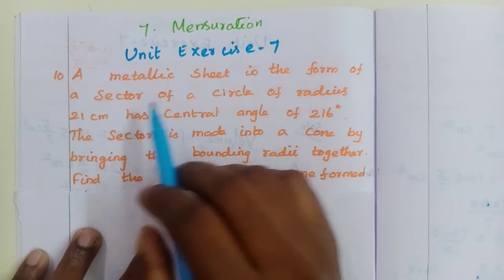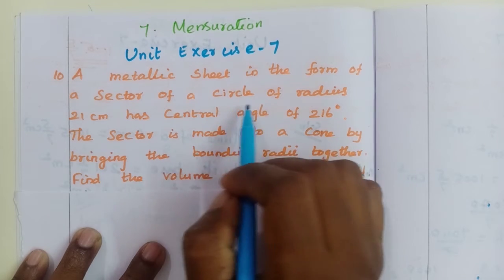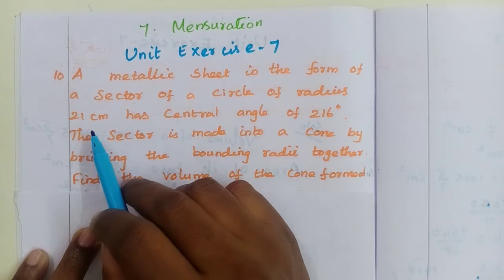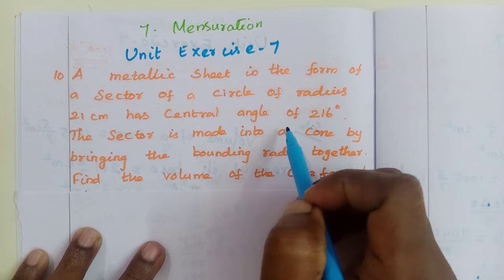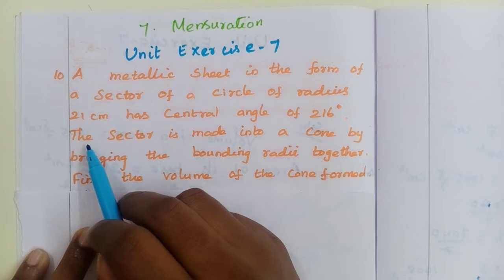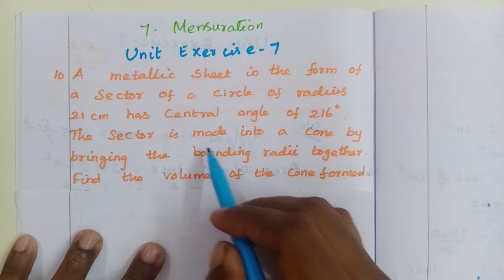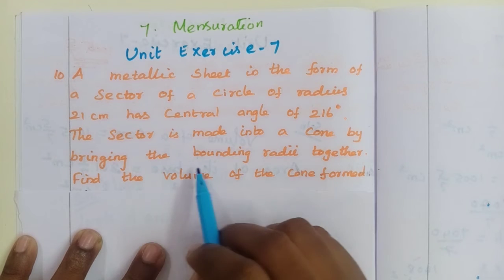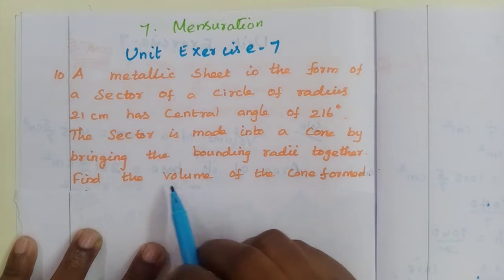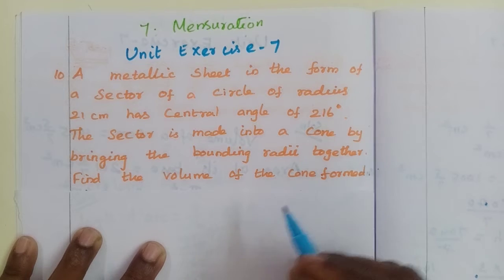A metallic sheet in the form of a sector of a circle of radius 21 cm has central angle of 216 degrees. The sector is made into a cone by bringing the bounding radii together. Find the volume of the cone formed.